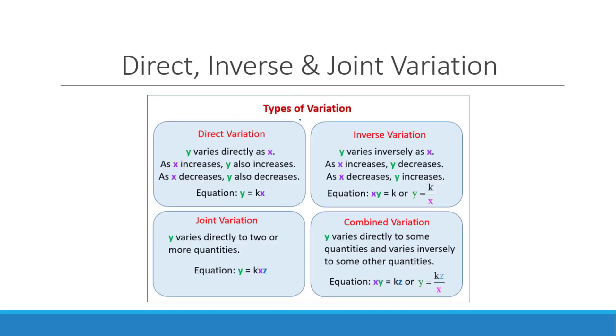Now let's talk about direct, inverse, and joint variation. Direct variation means that as something increases, the other something also increases. Or as something decreases, the other something also decreases. So essentially they match up.